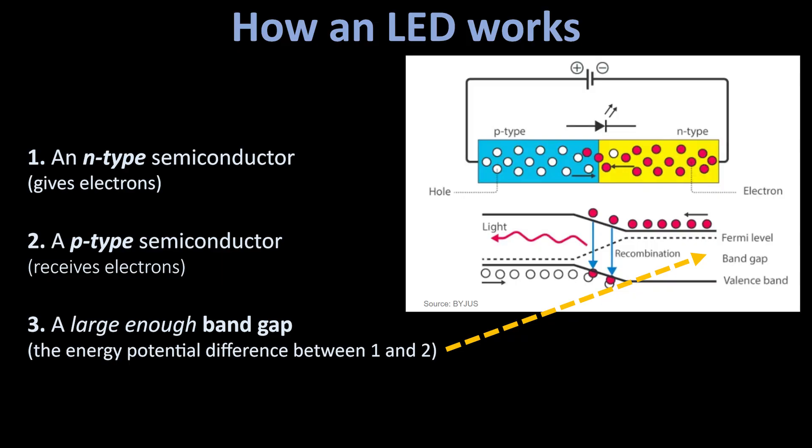Electrons fall from a higher energy level to a lower one. And when they do that, the energy difference is released as a photon, a particle of light. Unlike incandescent bulbs, where light is a waste product of heat, LEDs make light directly from electron energy jumps. It's very cool. And it's why LEDs can be 10 times more efficient than incandescent light sources.